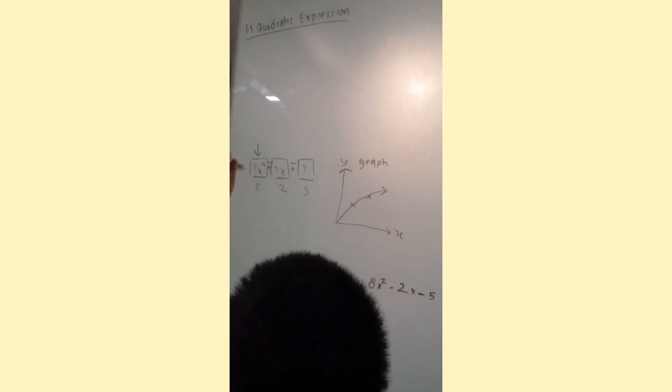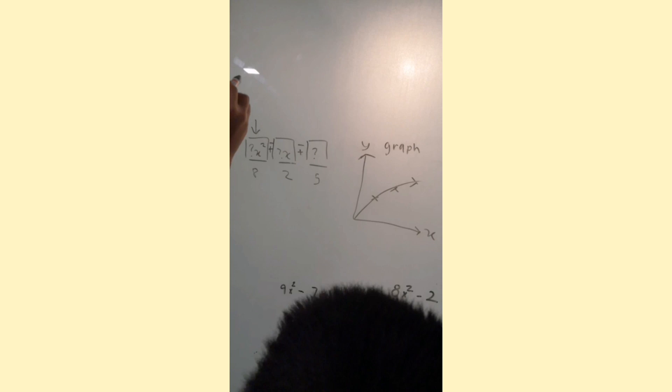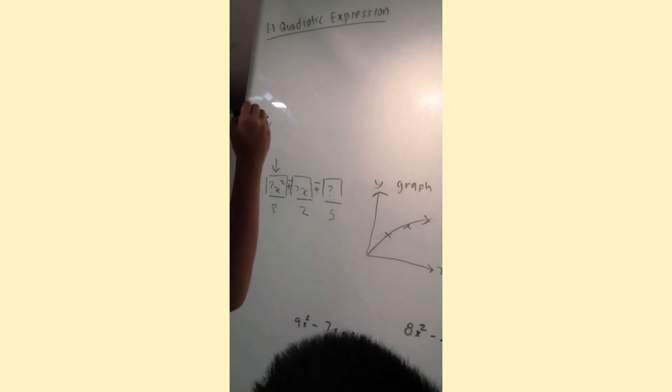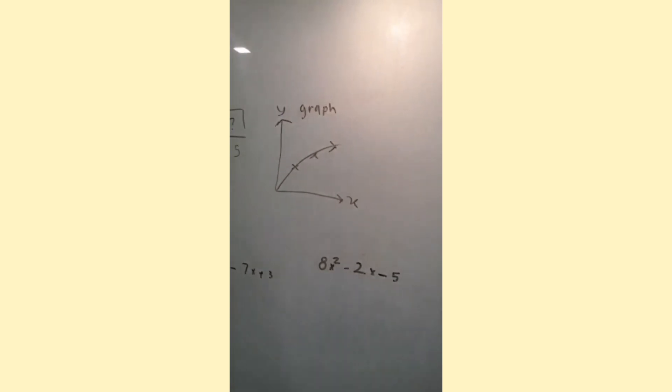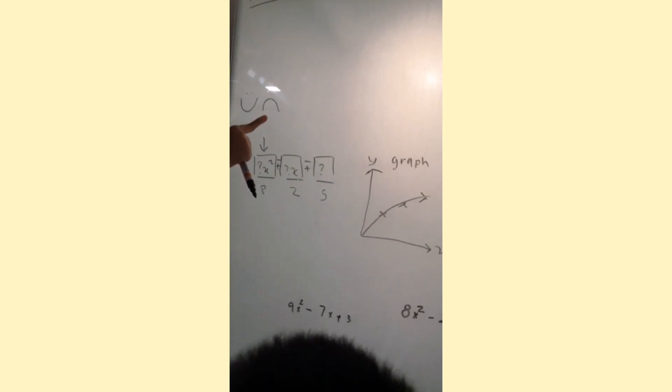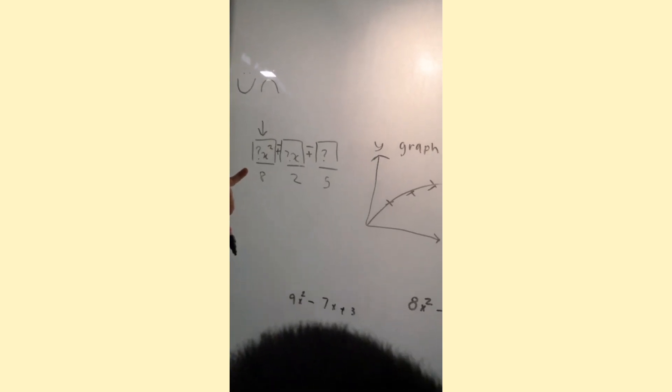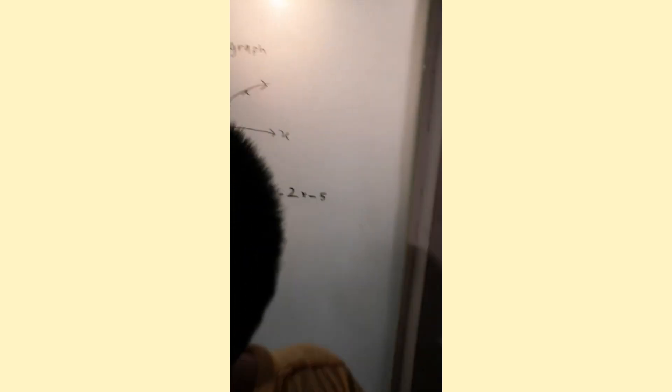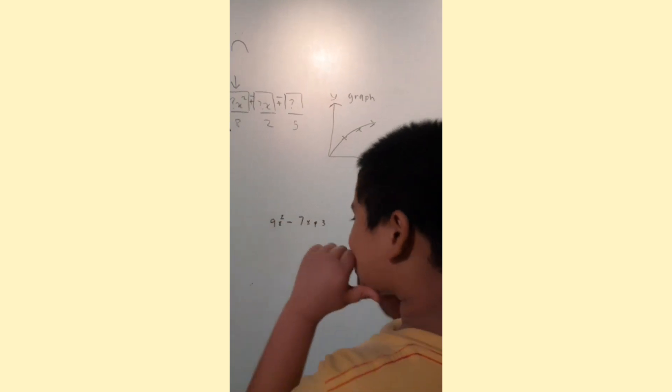So another rule that you have to remember is this box determines whether it's going to be a smiley face. See? It's fun, right? Or a sad face. So, later on, you're going to learn this. But remember, first box. With this first box, you can know whether it is smiling or whether it is sad.